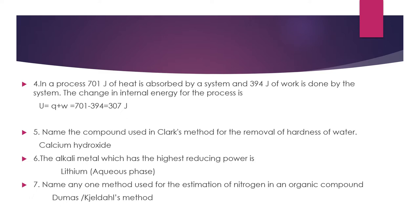Question 4: In a process, 701 joules of heat is absorbed by a system and 394 joules of work is done by the system. Calculate the change in internal energy. We know ΔU = q + w. Heat absorbed by the system means q is positive; work done by the system means w is negative. So the answer is 307 joules.